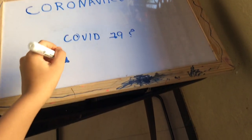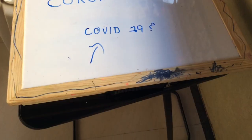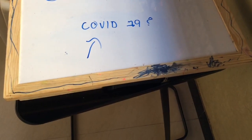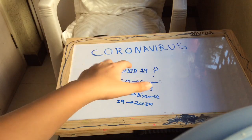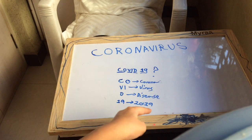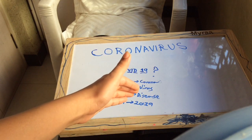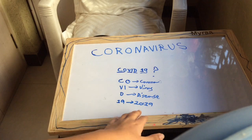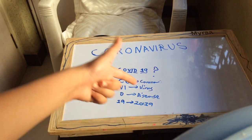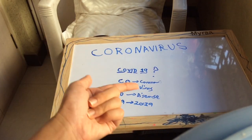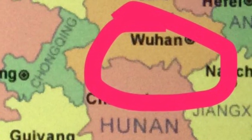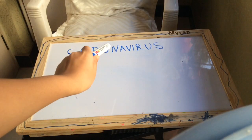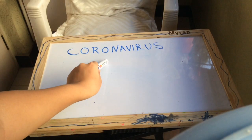We should ask ourselves this question first: COVID-19 stands for Coronavirus Disease 2019. It's the name of a disease, and it started in 2019 in a location called Wuhan, China.